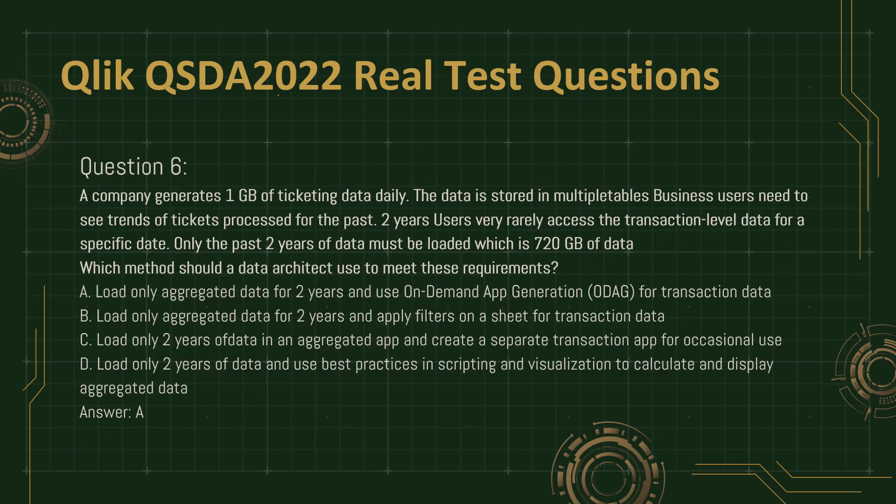Question 6. A company generates one gigabyte of ticketing data daily. The data is stored in multiple tables. Business users need to see trends of tickets processed for the past two years. Users very rarely access the transaction-level data for a specific date. Only the past two years of data must be loaded, which is 720 gigabytes of data. Which method should a data architect use to meet these requirements?